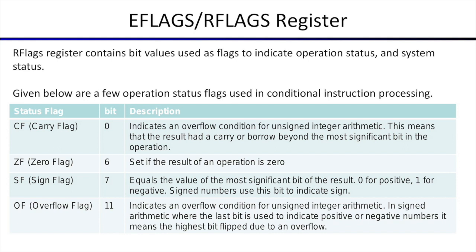The zero flag is bit 6 — it gets set if the result of an operation is zero. If you subtract two equal numbers and get zero, the zero flag will be set. The sign flag indicates after an operation whether the result is positive or negative — a 1 indicates a negative number. The overflow flag is similar to the carry flag but used in a different context: in signed arithmetic, if there is an overflow, the overflow flag is used, whereas in unsigned arithmetic, the carry flag is used.